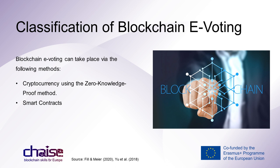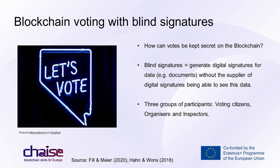Smart contracts are blockchain-based protocols that map written agreements and carry out the processing and verification of contract clauses. The blockchain is a distributed ledger system where the content of individual blocks can be consulted at any time. If used for electronic elections, the question arises of how votes can be kept secret. One possibility is blind signatures, which can generate digital signatures for data, documents, ballots, and payments without the supplier of digital signatures being able to see the data. David Chaum explains the procedure by analogy: the ballot is put into an envelope with a blueprint, the election organizer signs it blindly without knowing its contents, the signature is printed on the ballot via the blueprint, and the voter anonymously submits the blindly signed ballot.